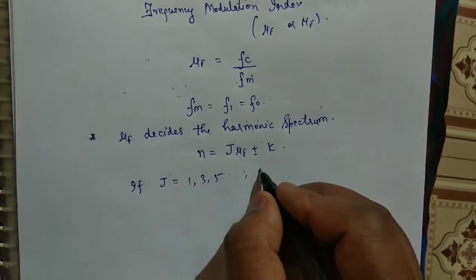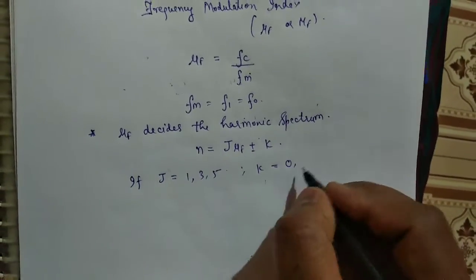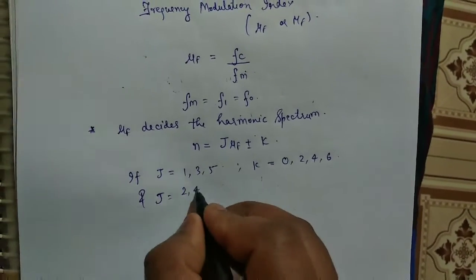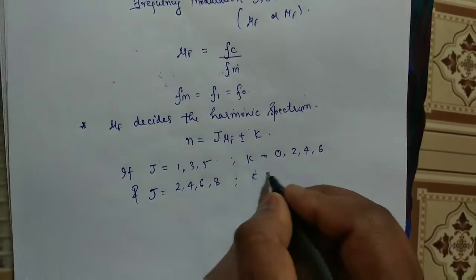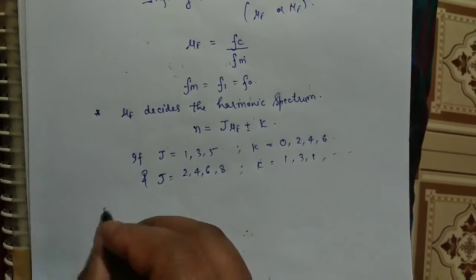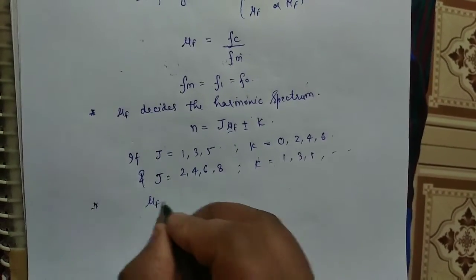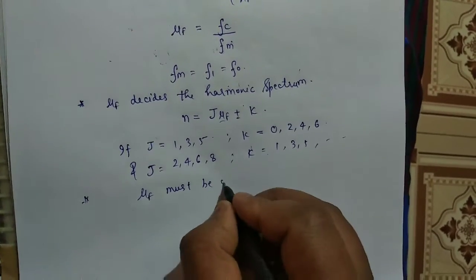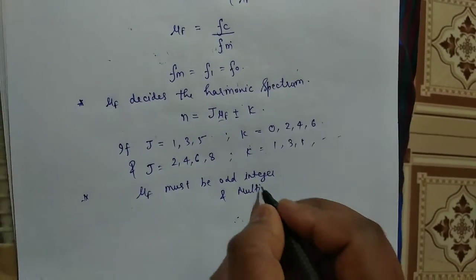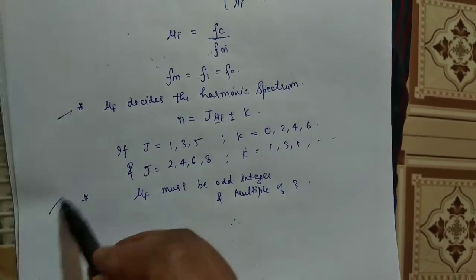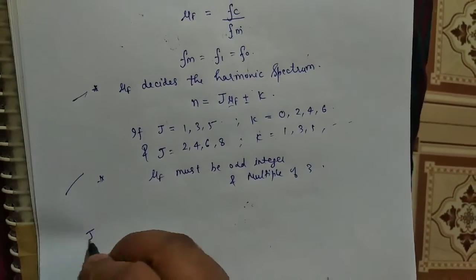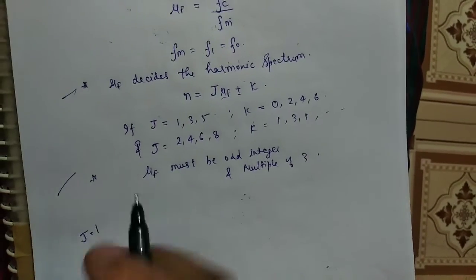n is equal to J μ_F plus minus K. If J is equal to 1, 3, 5, then K's value is 0, 2, 4, 6, and K value is 1, 3, 5 like this. So μ_F here must be odd integer and multiple of 3.